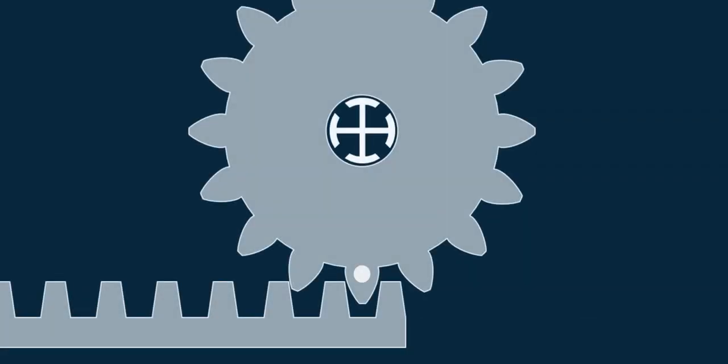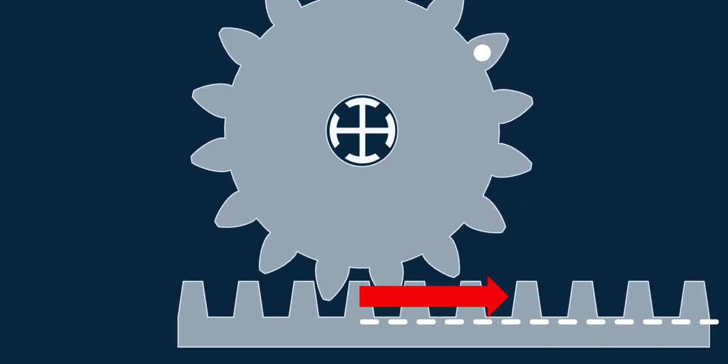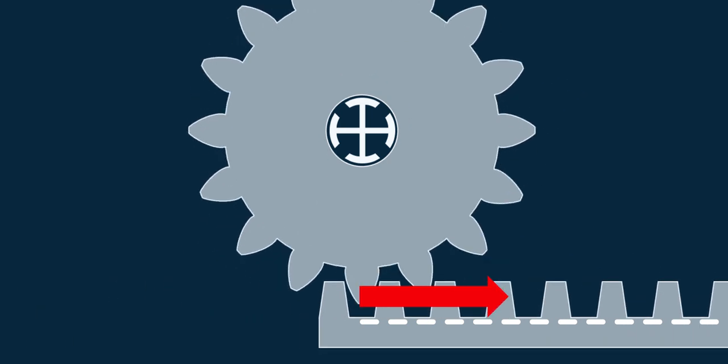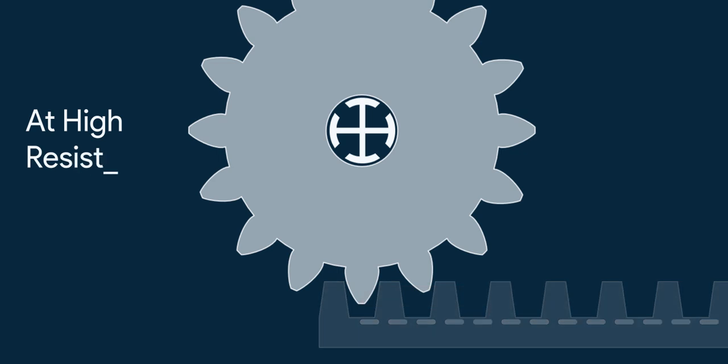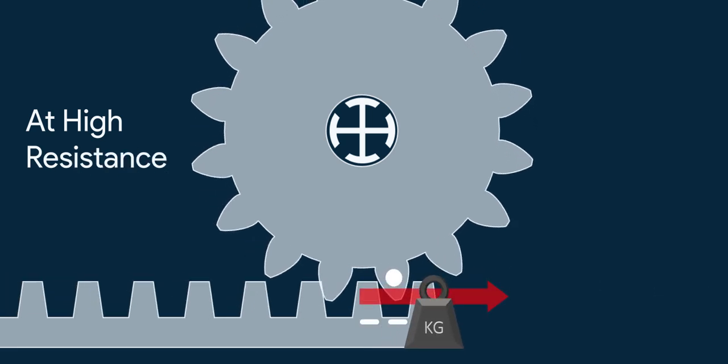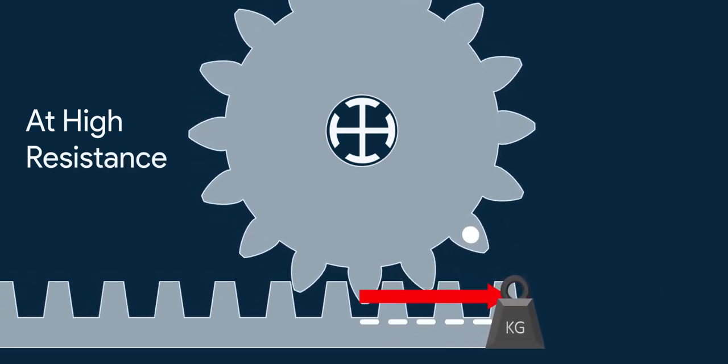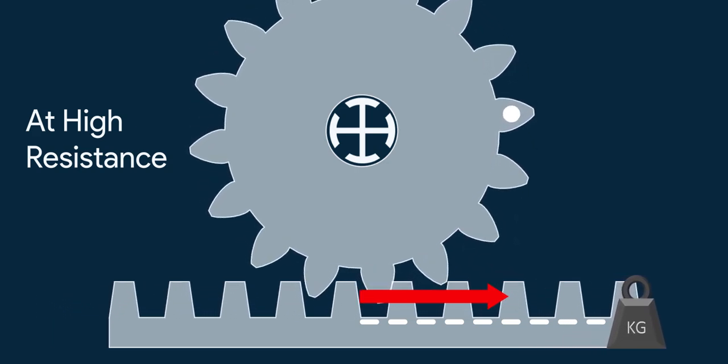While a bigger pinion will produce more displacement in each revolution, but will put lesser force. But in case of high resistance, the bigger pinion struggles to make displacement, as the force isn't sufficient to move the resisting body quickly.